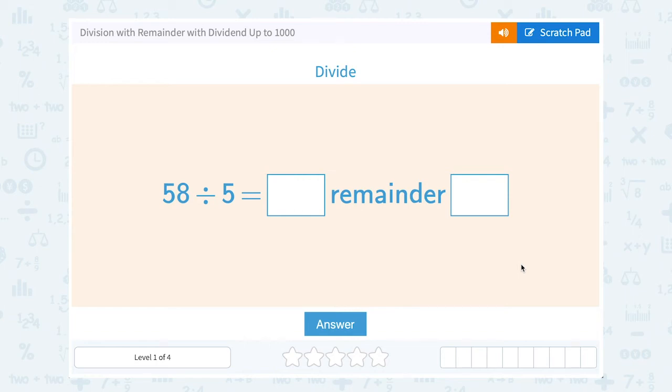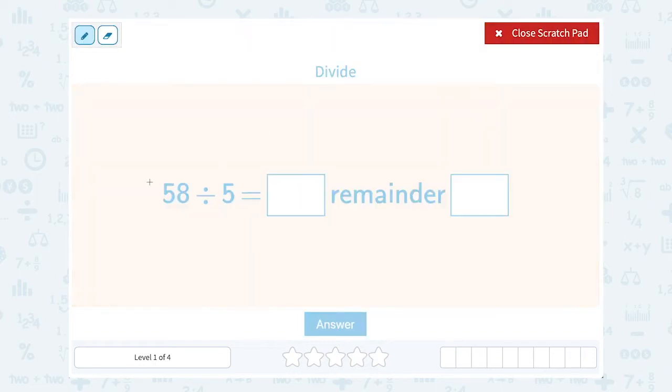Let's take a look at division with remainder with dividend up to a thousand. They asked us to divide 58 divided by 5. We want to know what number it's going to be with what remainder.